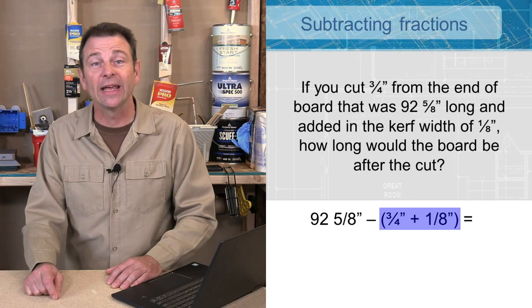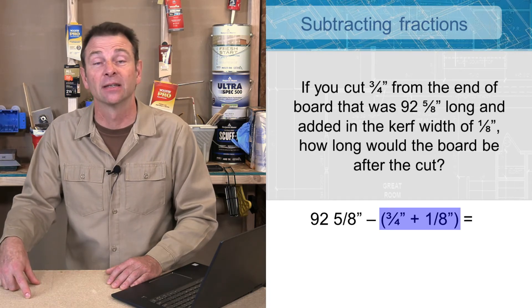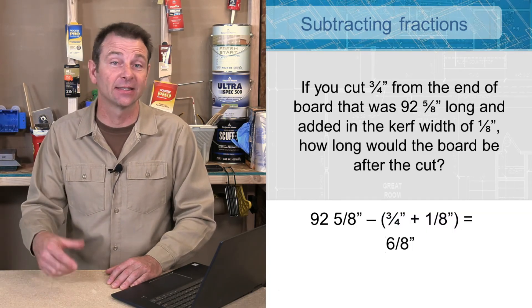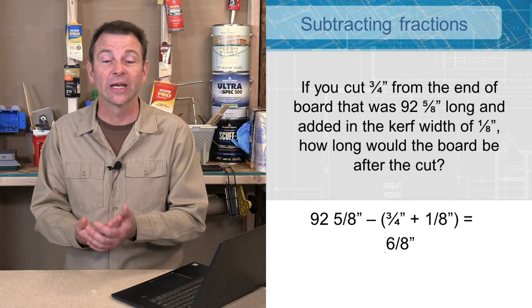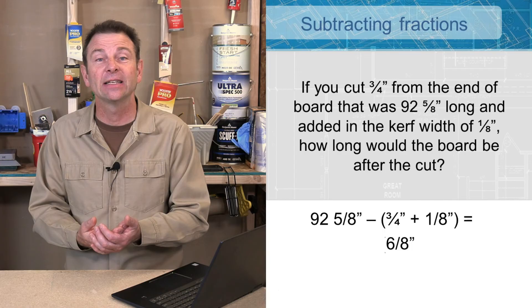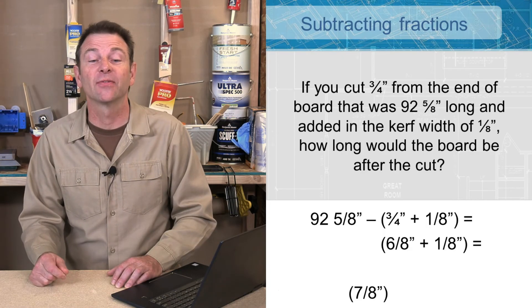We're going to keep our 1/8 inch and we're going to change our 3/4 to something to match it. So our 3/4 can be called 6/8 - that's just doubling both numbers. Now we have common denominators, we can add those together. 6/8 and 1/8 is 7/8. We need to remove that from our 92 and 5/8.